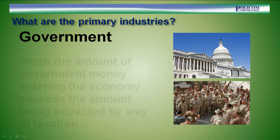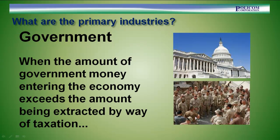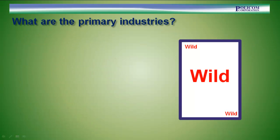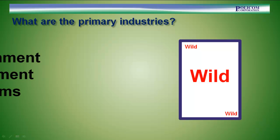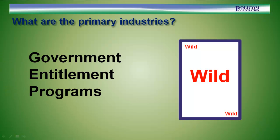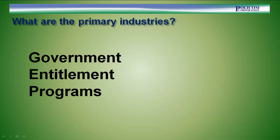State and federal government can be a primary industry. When the amount of government money entering the economy exceeds the amount being extracted by way of taxation, there is a net gain for the local community. This is one of the reasons why state capitals are typically strong economies, and certainly the reason why the Washington, D.C. metropolitan area is the strongest metropolitan area in the country. However, there is a wild card relative to government, and the wild card is government entitlement programs.